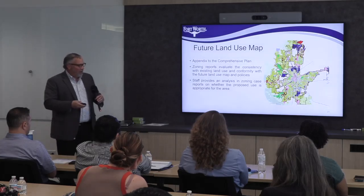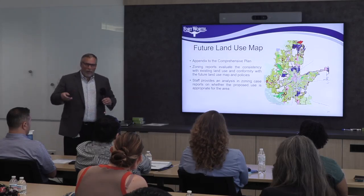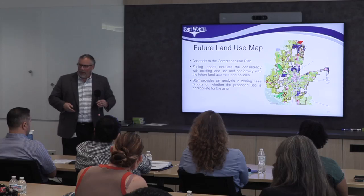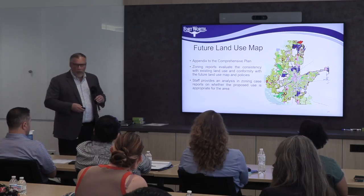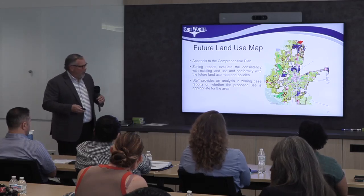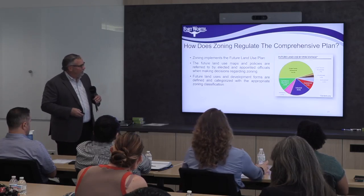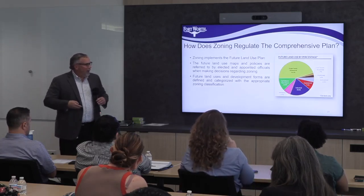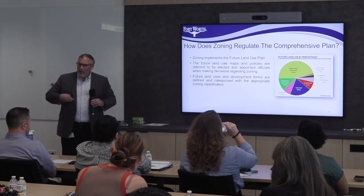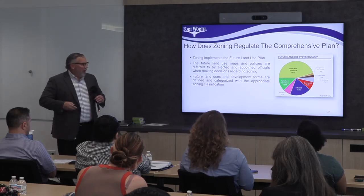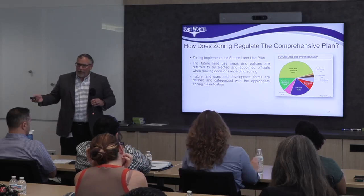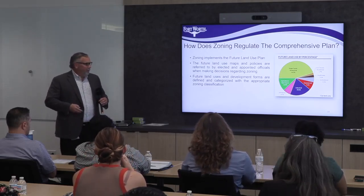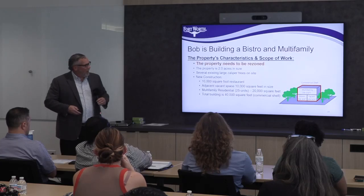In the comprehensive plan, we have a future land use map that we look at. We also look at policies within the comprehensive plan to see if they match what Bob or you are trying to do. The city of Fort Worth implements the future land use plan whenever there's a zoning change, and the maps and policies are referenced in our staff reports.